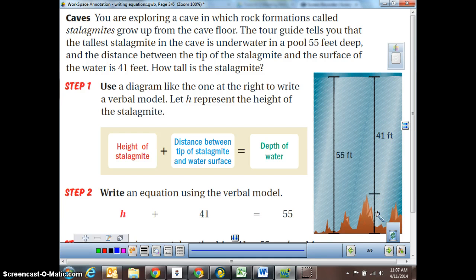So if we put it into words, we'd say the height of the stalagmite, so this, plus the distance between the stalagmite and the surface equals the total depth of the water. So this plus this equals this. So when we write using our verbal model to create our equation, we would say H, because we don't know how tall that stalagmite is, plus 41 feet equals 55.